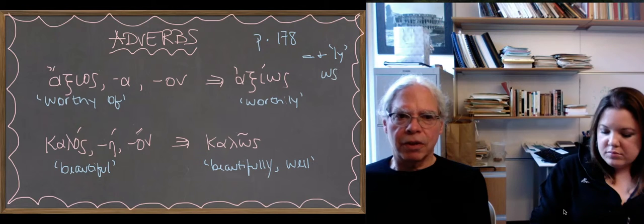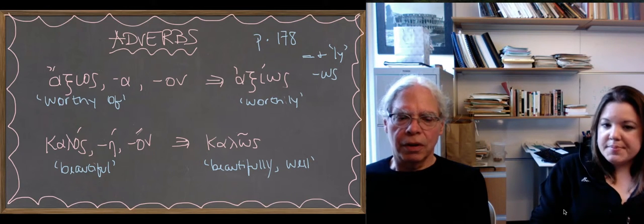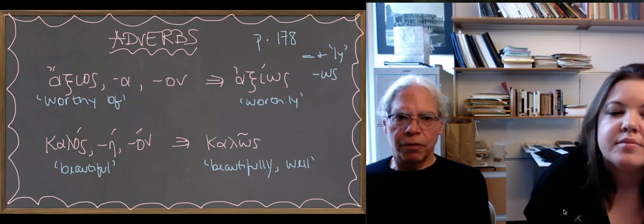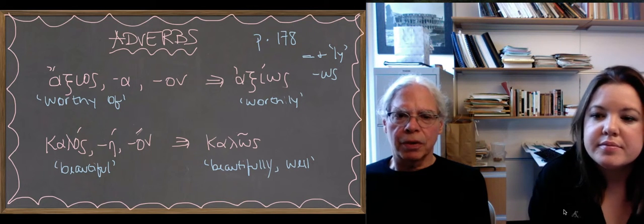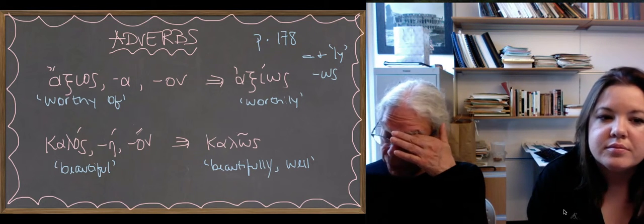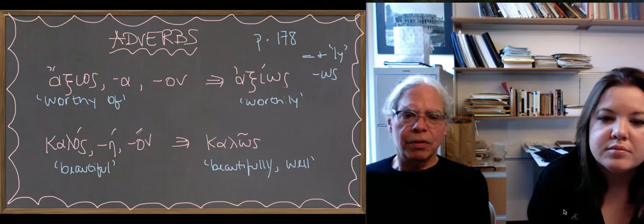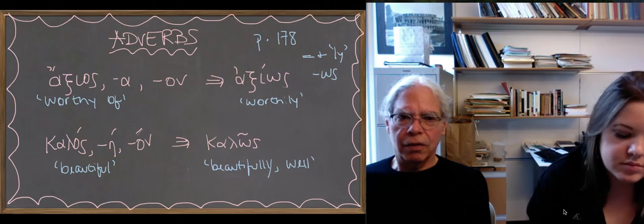So if you have an adjective axios, axia, axion, the adverbial form is axios with an omega sigma. And notice the accent just moves up one syllable because it has to, because you've got a long final syllable.